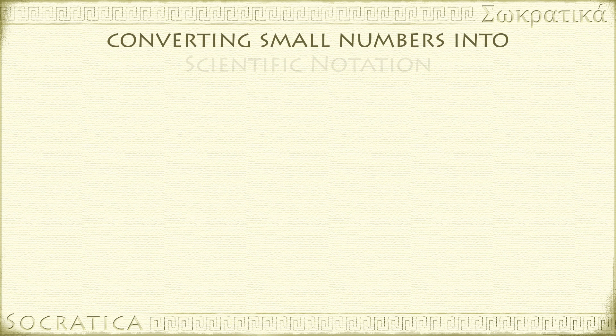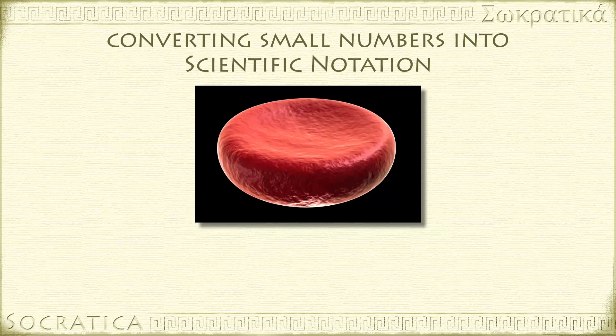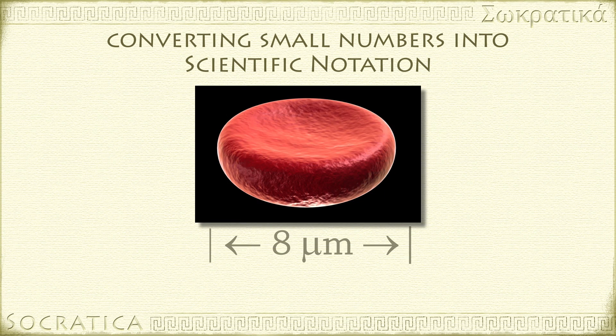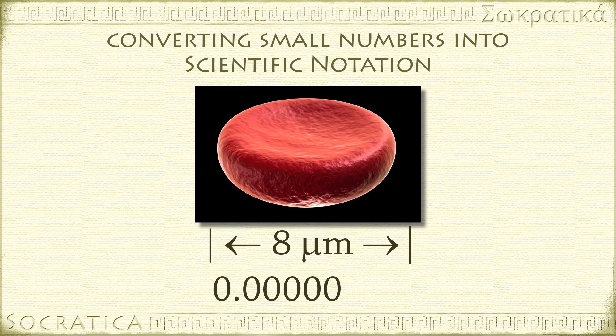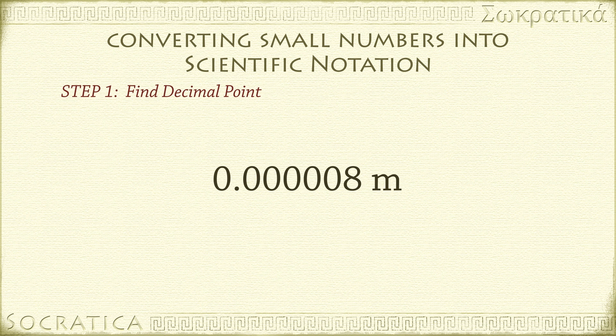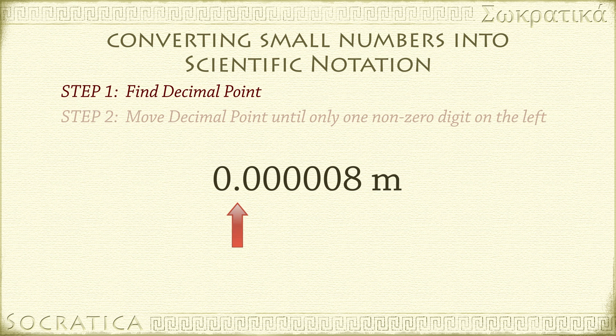We do something very similar when we use scientific notation for very small numbers. Let's use the human red blood cell as an example. It's 8 micrometers in diameter. That's 0.000008 meters. Once again, we really don't want to have to write down all those zeros. Let's rewrite it in scientific notation. Step 1: Find the decimal point. This one is here already. Step 2: Move the decimal point until there is one non-zero digit to the left of the decimal. Don't forget to count how many steps you move the decimal point.